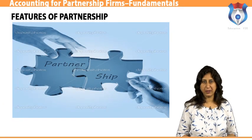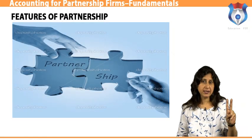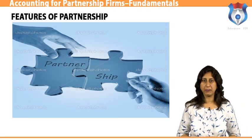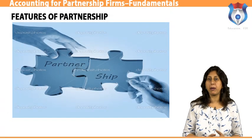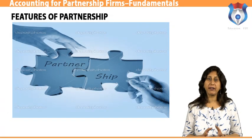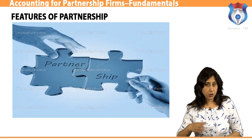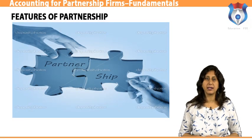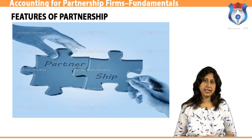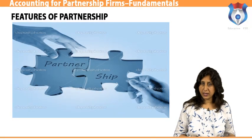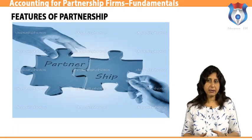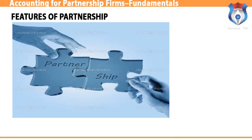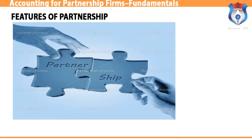Let us study the features of partnership. There must be at least two persons to form a valid partnership. Section 11 of the Indian Partnership Act 1932 restricts the maximum number of partners to 10 for carrying on banking business and 20 for other kinds of business. Partnership comes into existence by an agreement, either written or oral, among the partners. The written agreement is called the partnership deed.